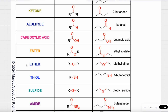We can also have an ether. An ether is when we have an oxygen in between two carbons. If you see an oxygen attached to carbon on the left and carbon on the right, that's an ether. This molecule is called diethyl ether.